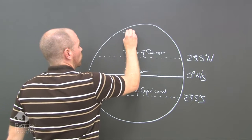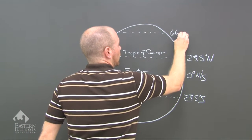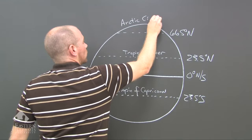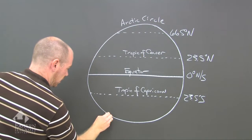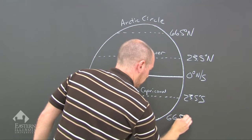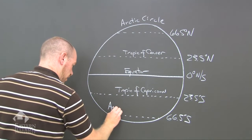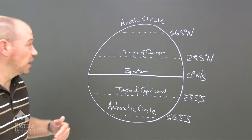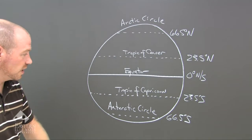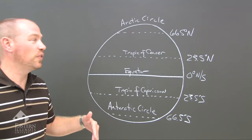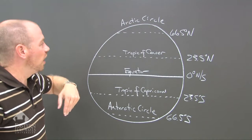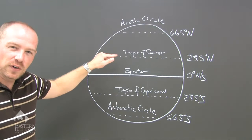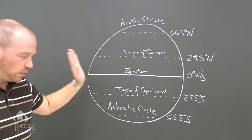Now we bring in the last two lines. At 66.5 degrees north, this is called the Arctic Circle. And then at 66.5 degrees south, we have the Antarctic Circle. These two imaginary lines at 66.5 degrees north and 66.5 degrees south are drawn to show that this is the extent of the oblique ray on the other side of the Earth — it's the division between night and day.